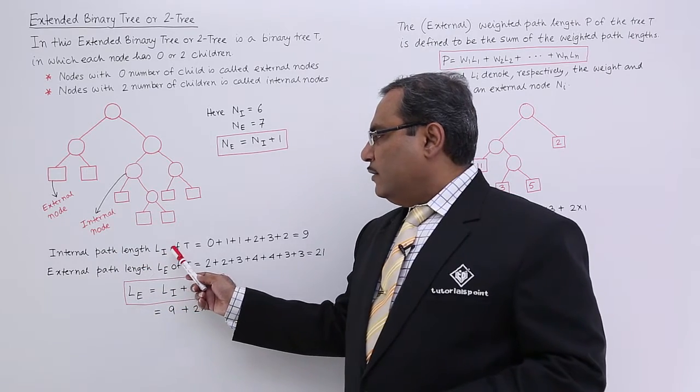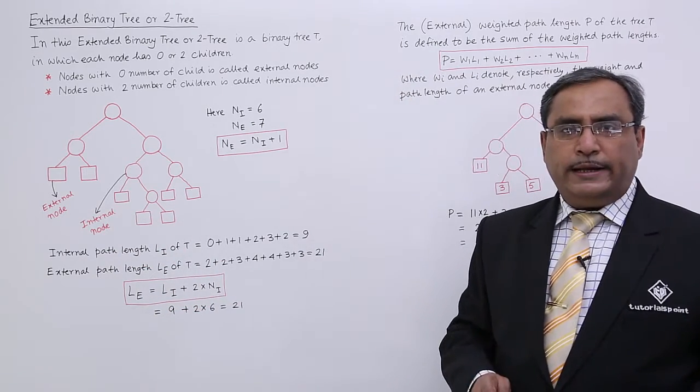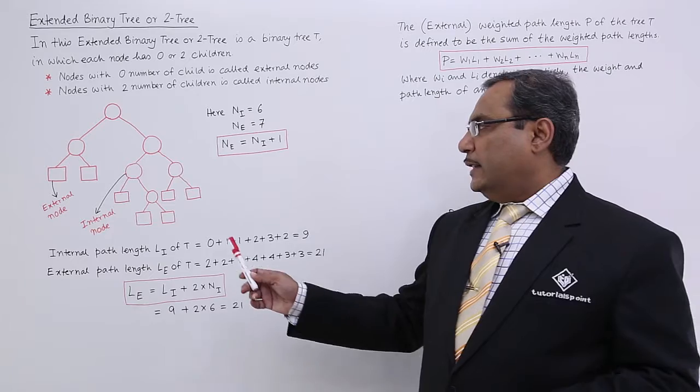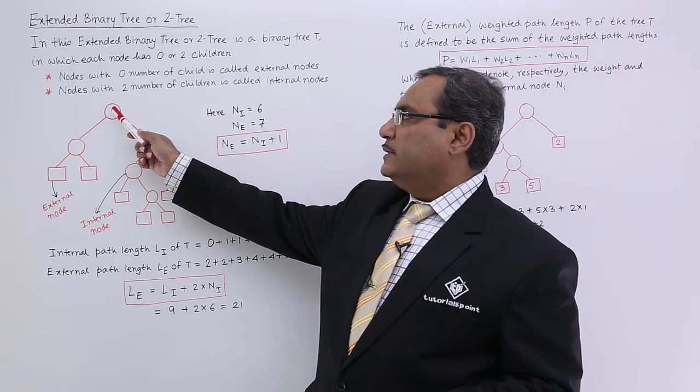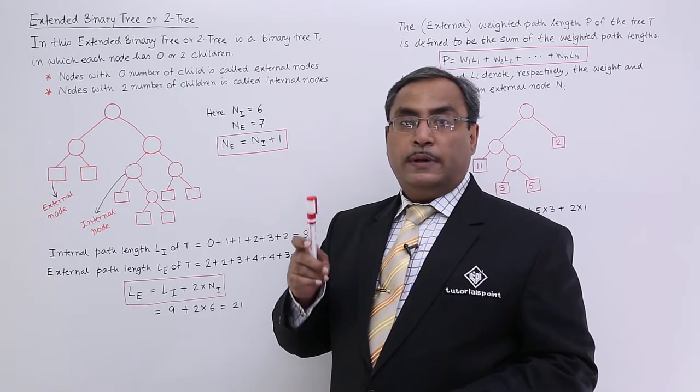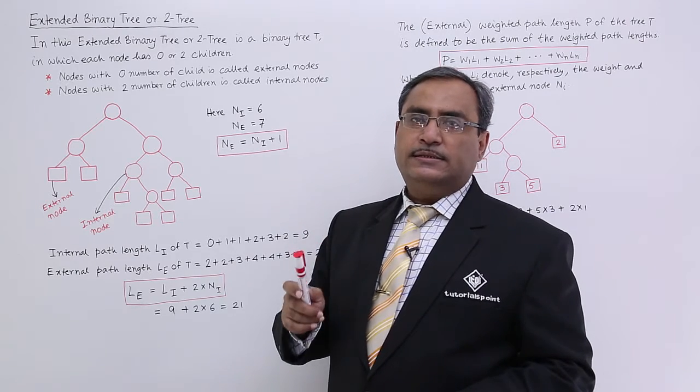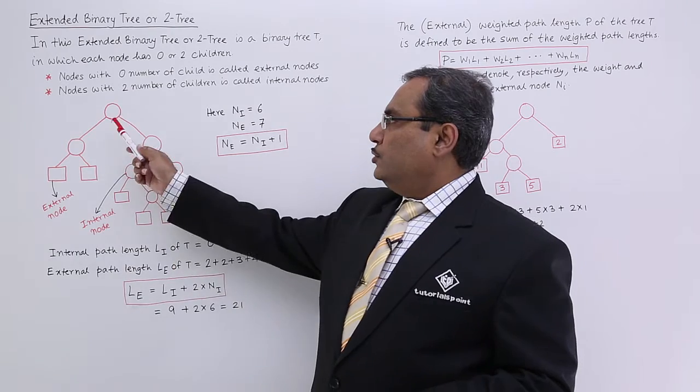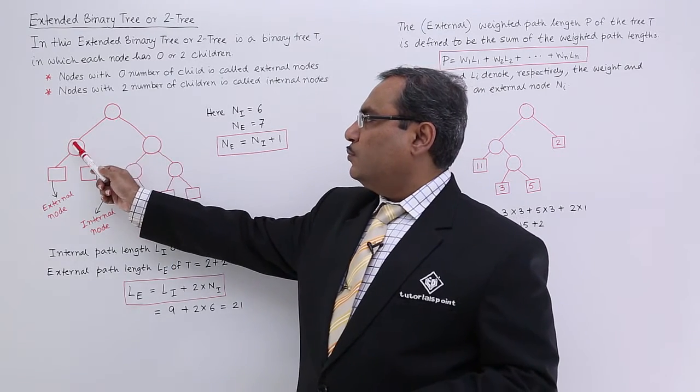Internal path length LI of T. So we are going to calculate internal path length and that is for this one path length is 0. From the root node to this particular node, number of edges you are traversing that is the internal path length for that particular node. So for this 0, for this 1,